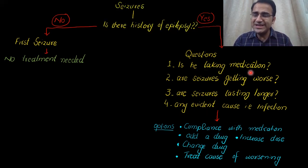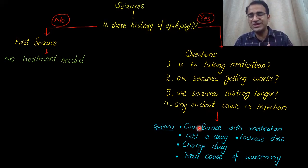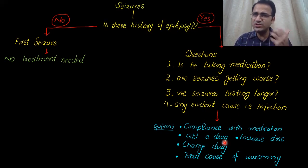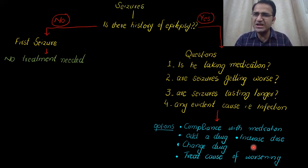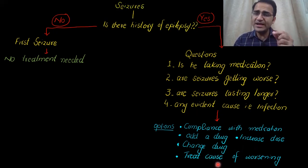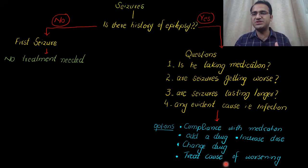Check whether the patient is compliant with their treatment — if not taking medication properly, they will present with recurrent seizures. If seizures are getting worse despite medication, consider adding another anti-seizure medication, increasing the dose, or changing the drug. If there is an evident cause like infection, treat that precipitating cause.